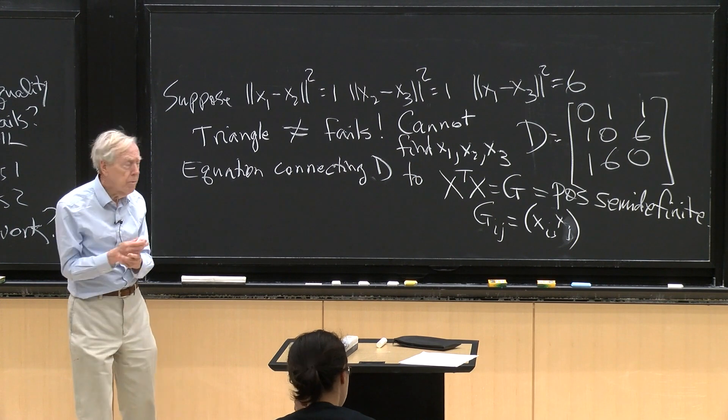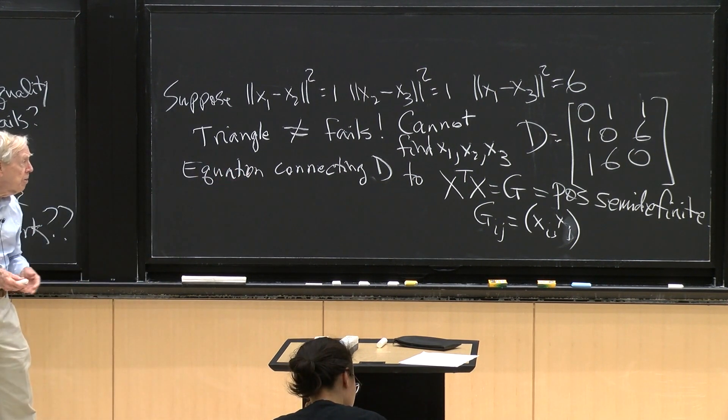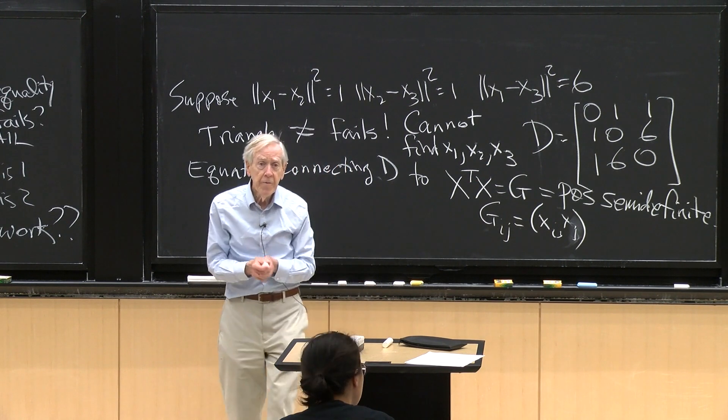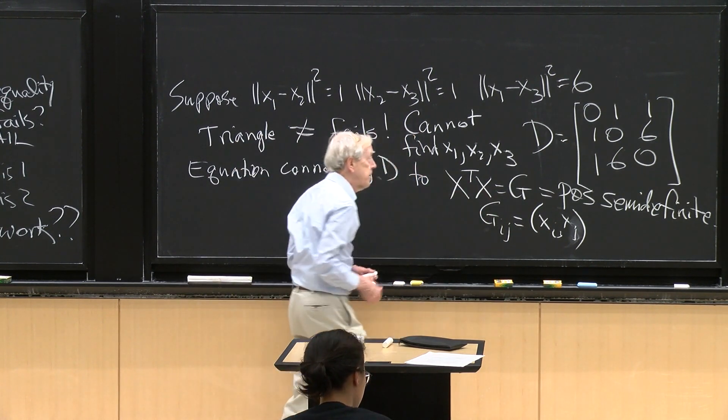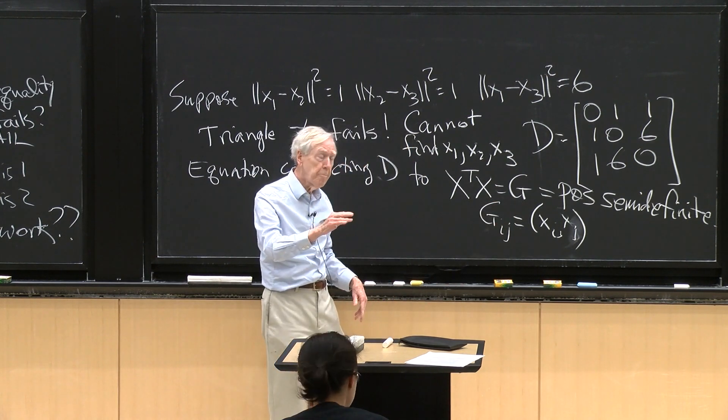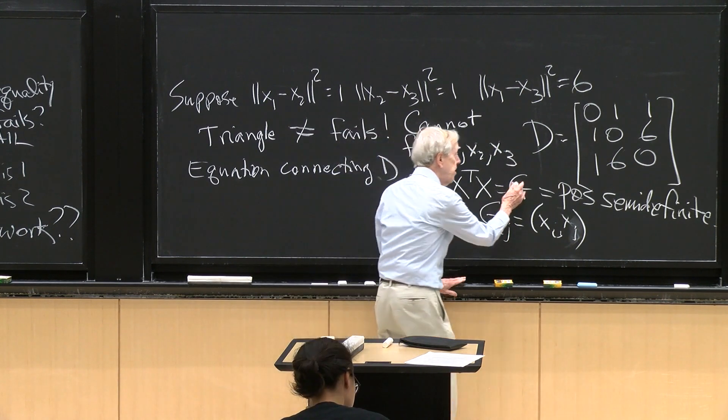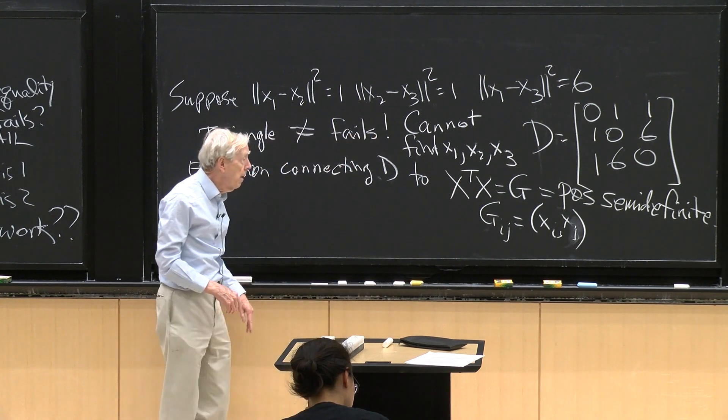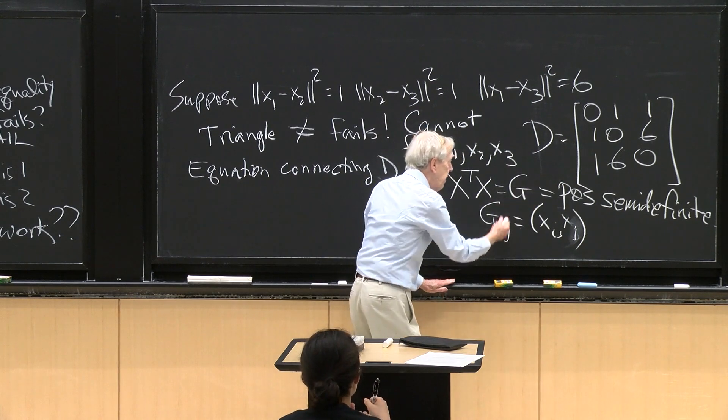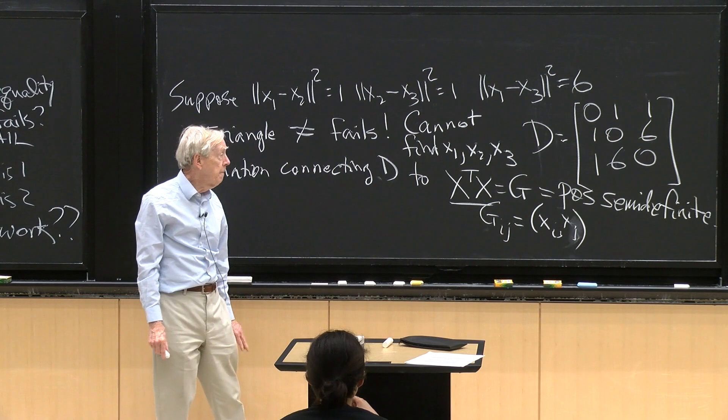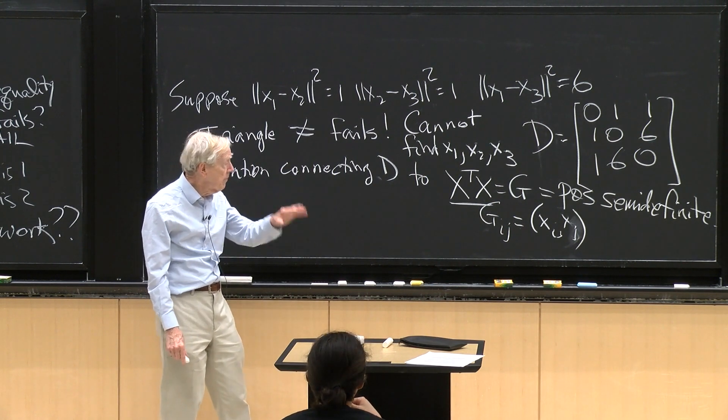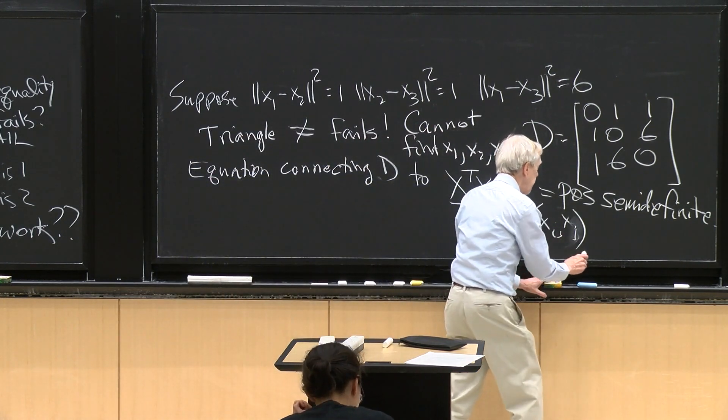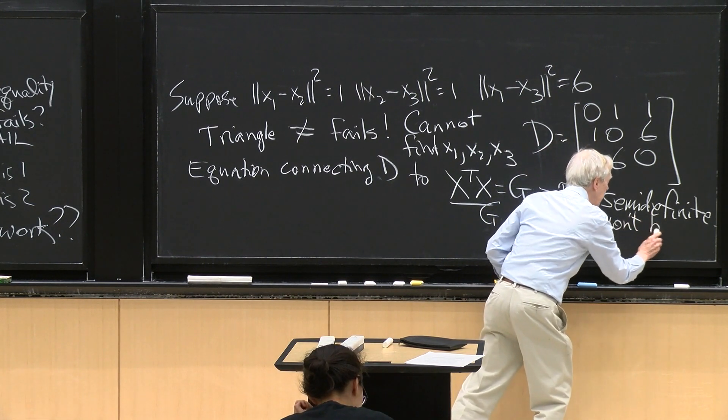So that's the distance matrix. And we would like to find the job was to find, we cannot find x1, x2, and x3 to match those distances. So what goes wrong? Well, there's only one thing that could go wrong. When you connect this distance matrix D to the matrix x transpose x. You remember the position matrix? Maybe I called it G. This is giving gij is the dot product of xi with xj.